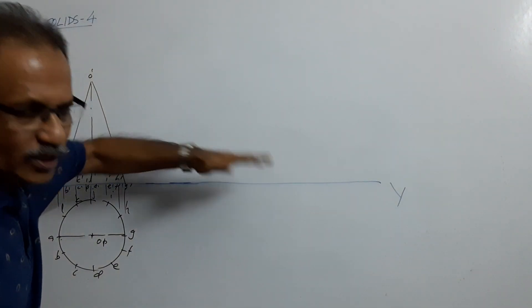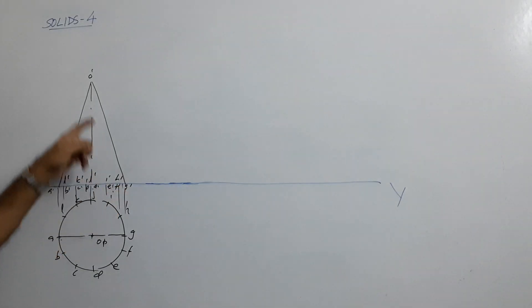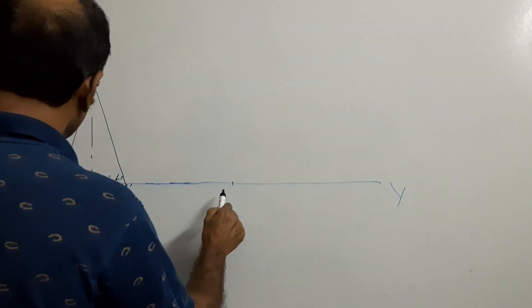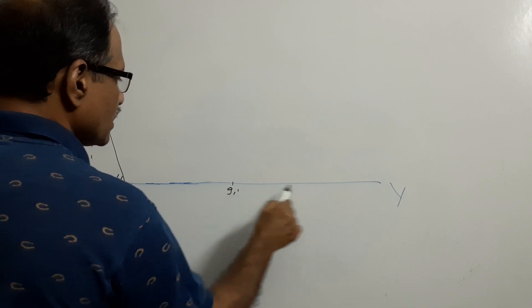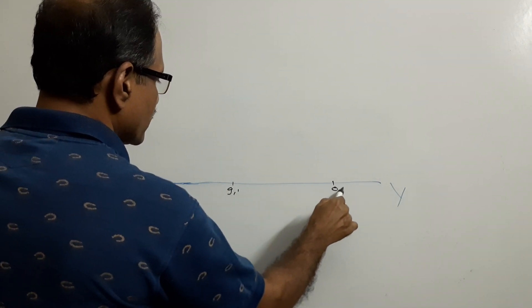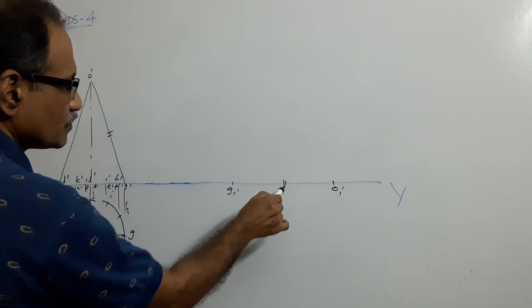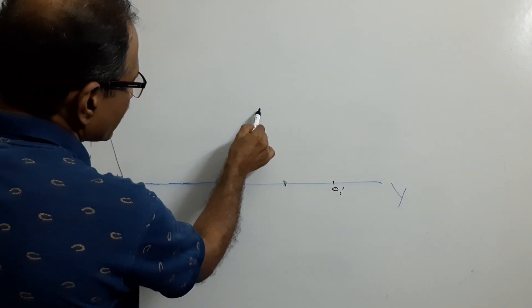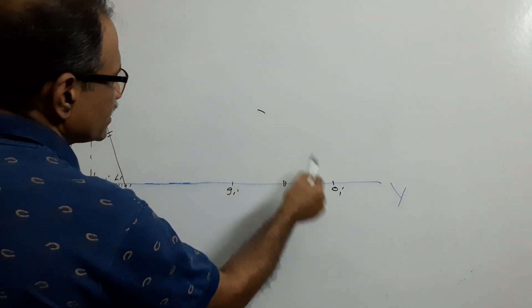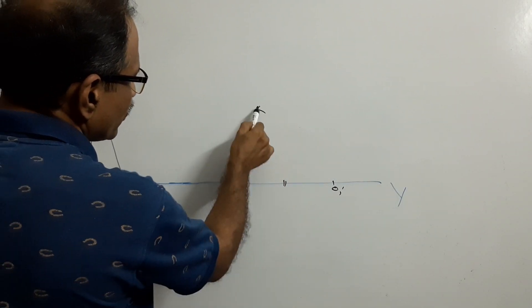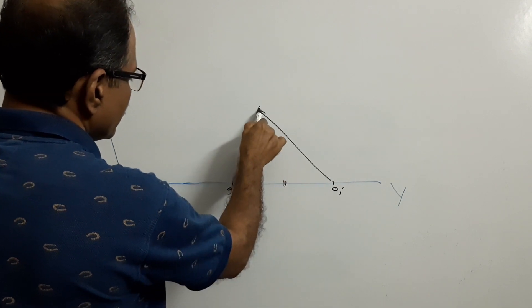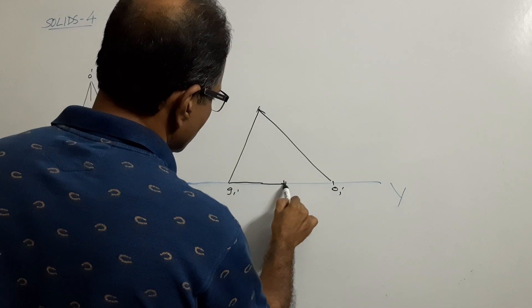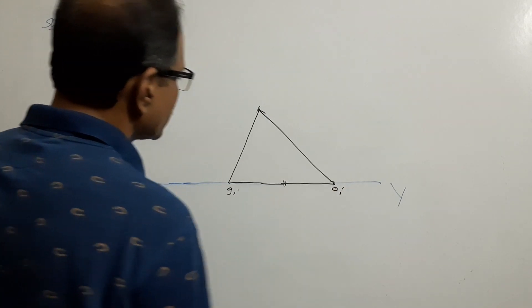Push it so that it lies on HP. When it lies on HP, G dash, O dash will come on XY line. So what I do is, I take G1 dash and O1 dash, this distance. Then take this distance in your compass. Draw an arc. Take this distance in your compass. Draw an arc. You got the cone redrawn.